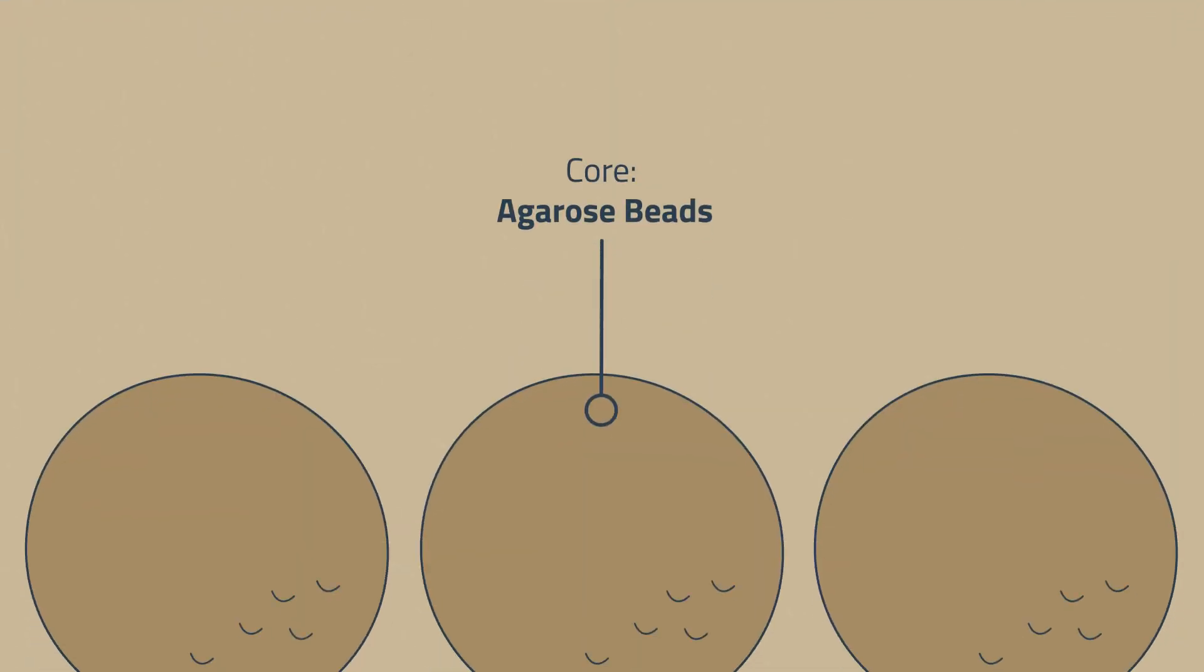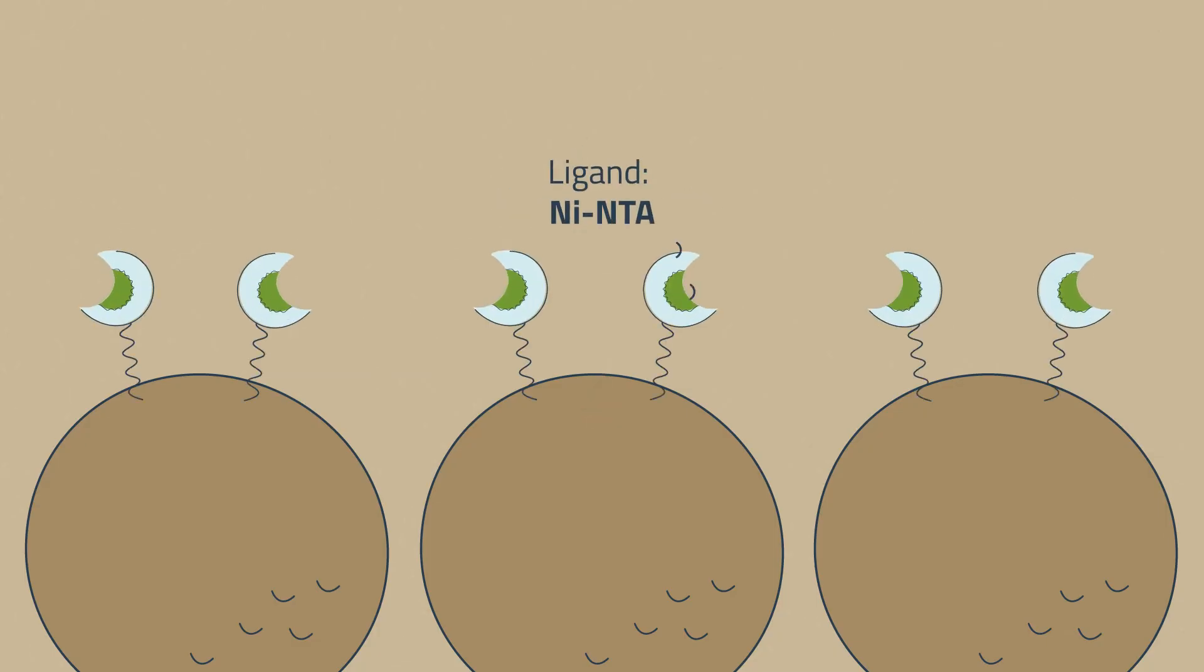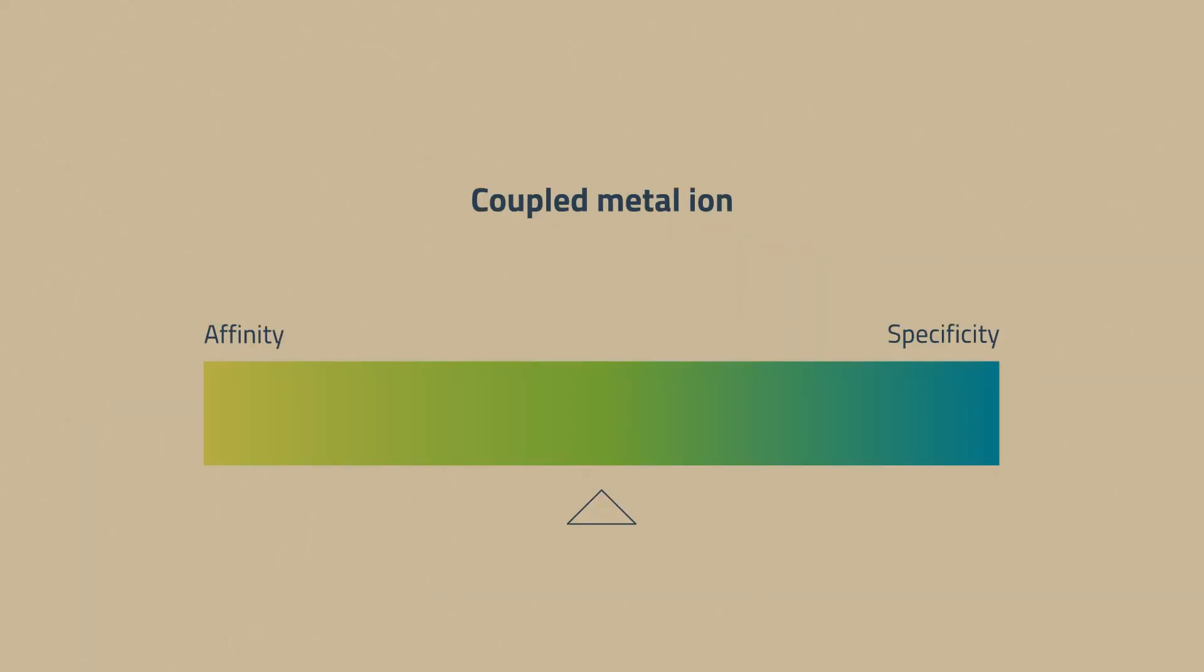Typically, the stationary phase during IMAC is made from agarose beads and the ligand could be NTA that is coupled to a metal ion. The metal ion should be chosen wisely as it impacts the balance between affinity and specificity of the purification.